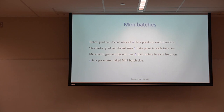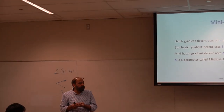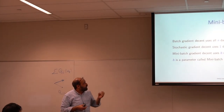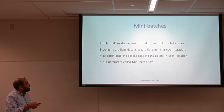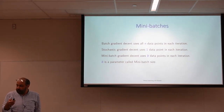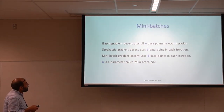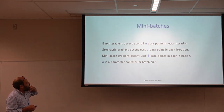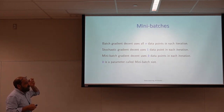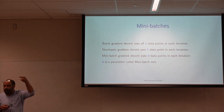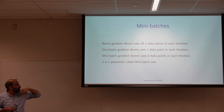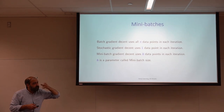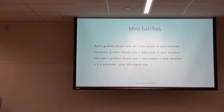The vanilla gradient descent is also called batch gradient descent. If you work with all N data points it's called gradient descent or batch gradient descent. If you take only one point at a time it's called stochastic gradient descent. Mini-batch gradient descent means you work with B of them — a subset of points, not all of them, not one of them, but B of them.